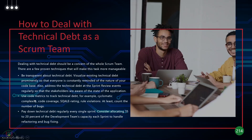When you talk about code metrics, there are some metrics available to track technical debt, like cyclomatic complexity, code coverage, quality rating, rule violations, and counting the number of bugs.